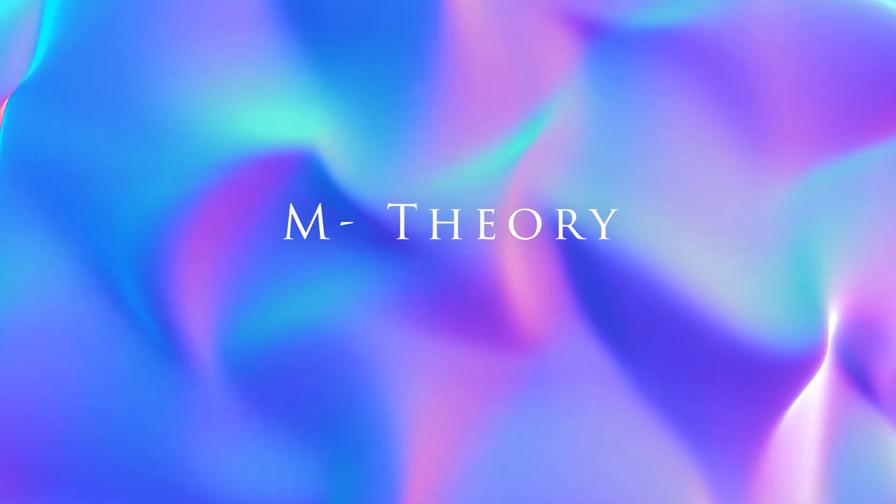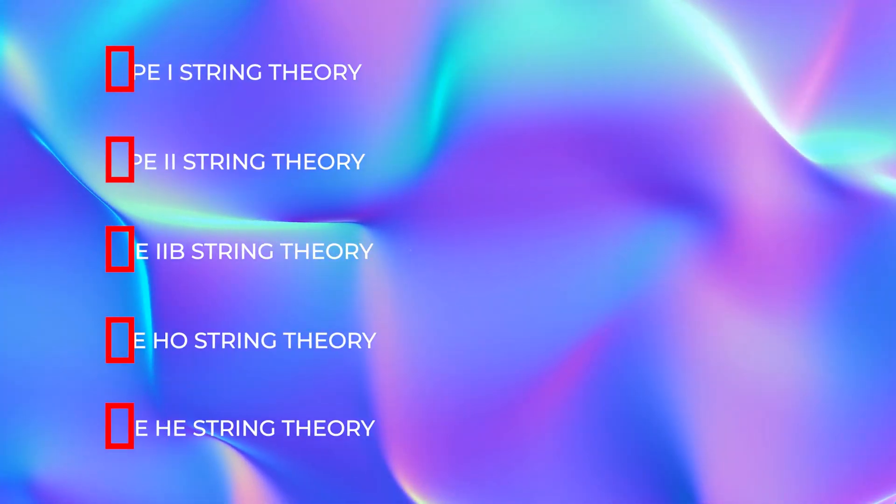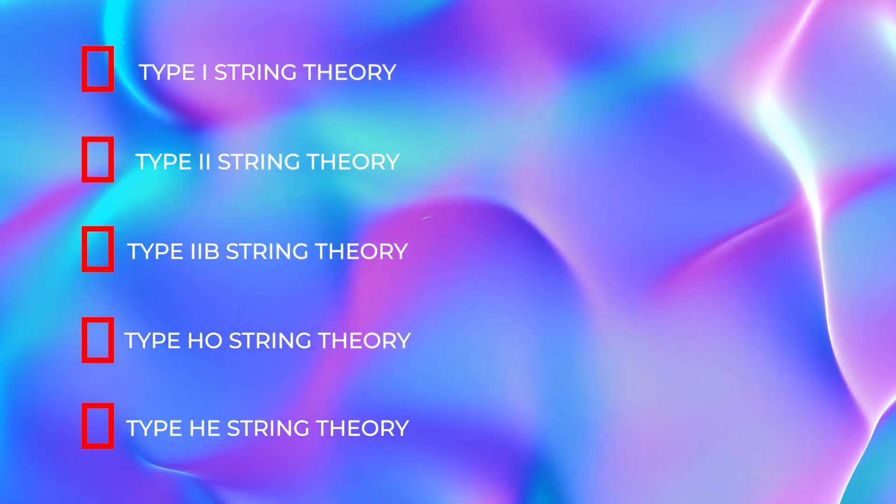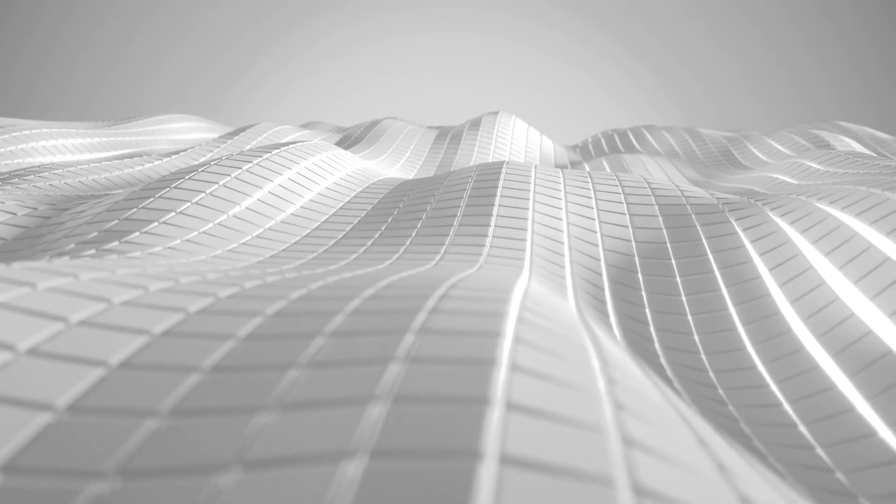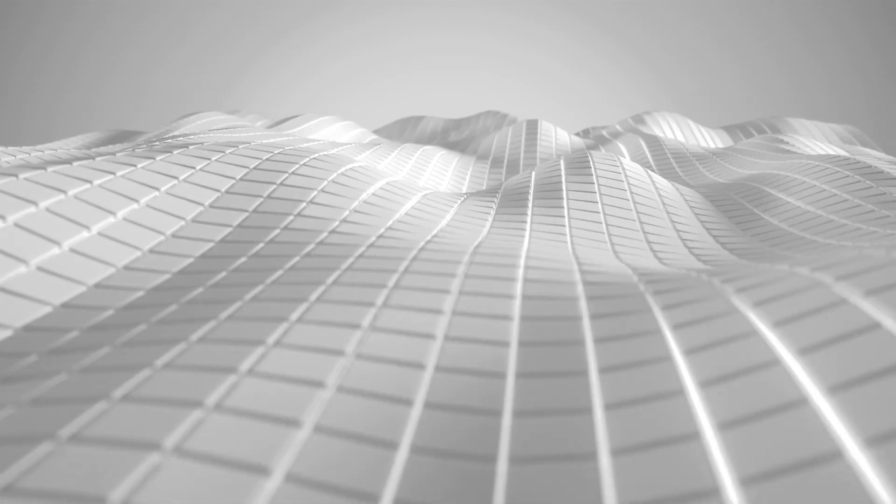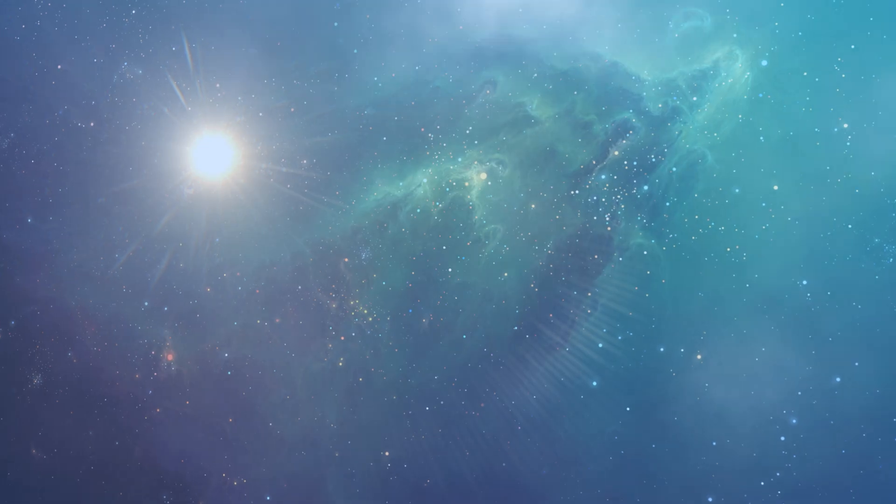Before we end the video, let's talk about M-theory. M-theory is a theoretical framework in physics that unifies all five versions of superstring theory. It proposes the existence of 11 dimensions, including the familiar three of space and one of time, as well as seven extra dimensions that are curled up or compactified.